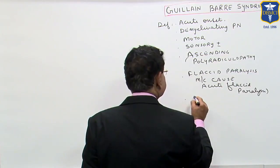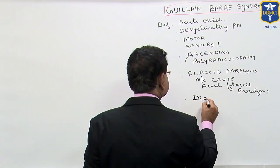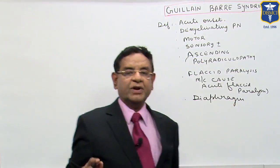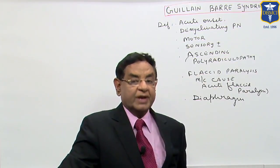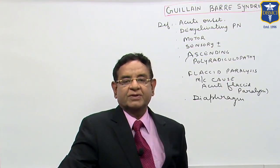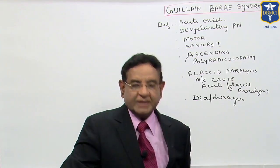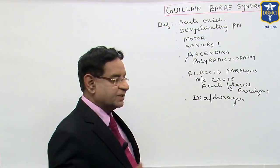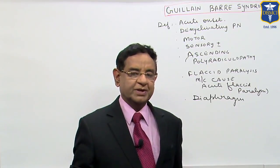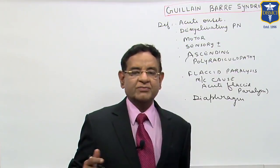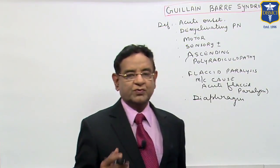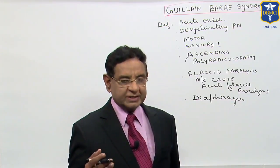It may involve the diaphragm, and the diaphragm is the main active muscle for inspiration. Remember, inspiration is active but expiration is passive. The diaphragm contributes about 80 to 90 percent of the force for inspiration. If the diaphragm is involved, we will go into respiratory failure. That is why we have to be very watchful about the involvement of respiration.